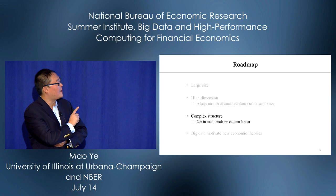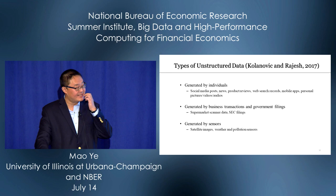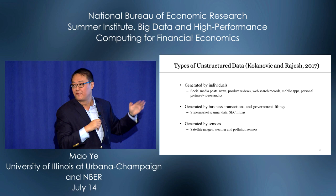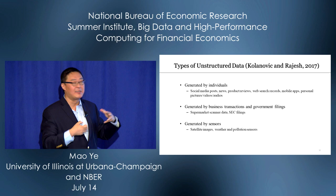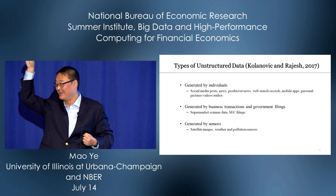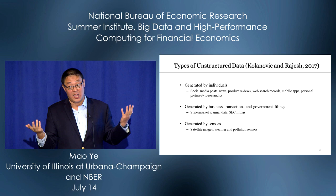Now, complex structure — data not in traditional row-column format. A nice summary from two authors at JP Morgan divides unstructured data into three types: generated by individuals (social media, product reviews, web searches); generated by business transactions (supermarket scanner data, SEC filings); and created by sensors (satellites, pollution and weather sensors). All of these can help you ask interesting economic questions.